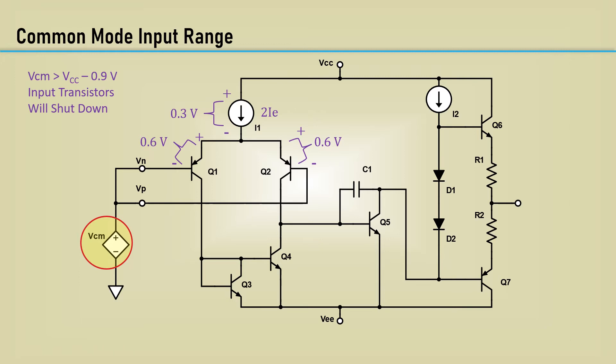On the negative side, Q3 has a VBE drop of 0.6 volts. That means if VCM is less than VEE plus 0.6 volts, the current mirror will shut down. In summary, a common mode voltage cannot operate near the rails.